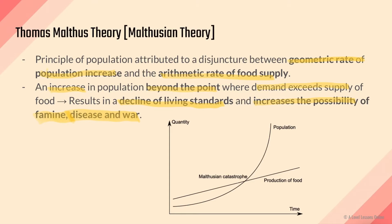What Malthus was trying to state was that population will continue to grow to a certain point whereby it will clash with the amount of food supply available to everyone on earth. Once it hits that point, living standards and quality of life will start to decrease, simply because there is not enough food to go around. The Malthusian Theory revolves around this idea — we call it a Malthusian Catastrophe — whereby population growth and food supply clash, and from then on, there won't be enough resources to satisfy its needs.